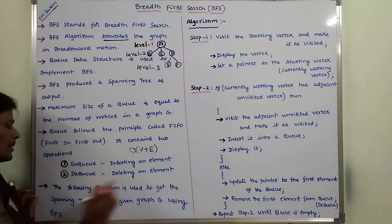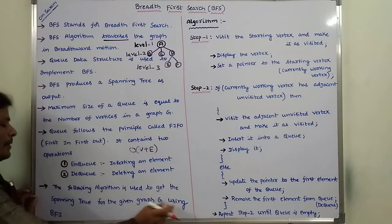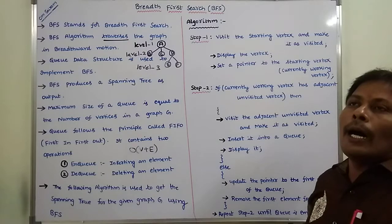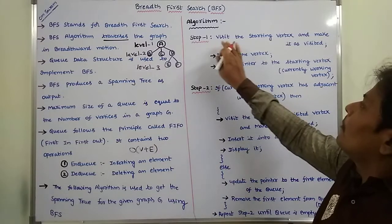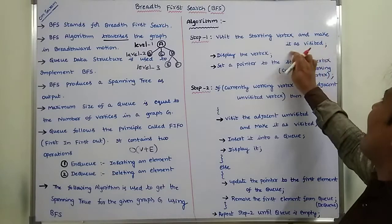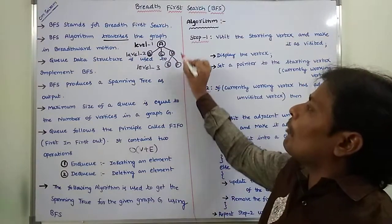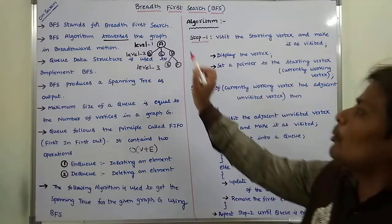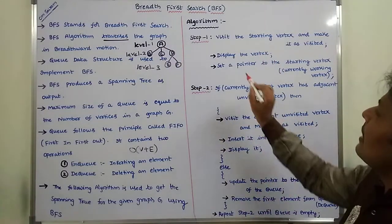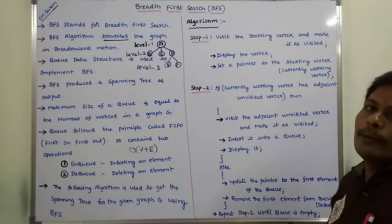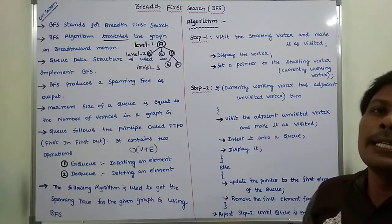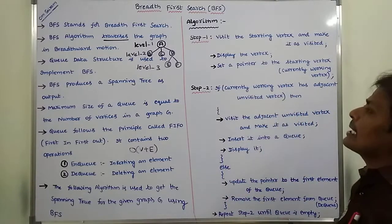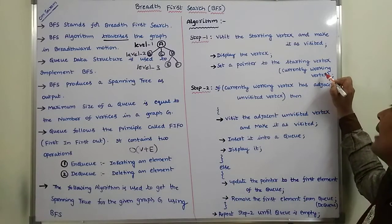The following algorithm is used to get the spanning tree for a given graph G using BFS. Step 1: Visit the starting vertex and mark it as visited. In this graph, the starting vertex is A. Display the vertex — so vertex A is displayed. Then set a pointer to the starting vertex. Whatever vertex we select, that vertex is the starting vertex, and it is called the currently working vertex.